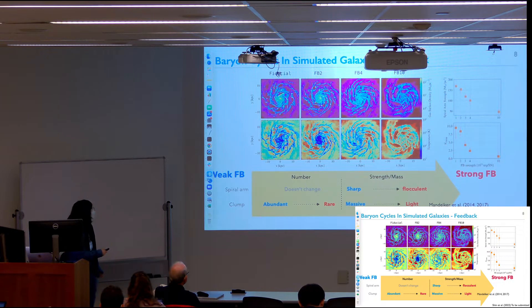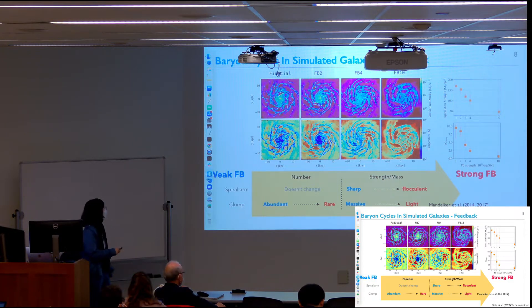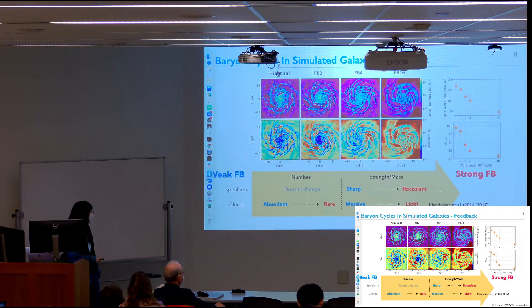This is the summary of the feedback simulation. For the higher feedback, we can see hotter ISM, and also this shows the gas density. We can see more fluffier or less dense ISM. This figure shows the spiral arm strength, and we can see that this is decreased by the feedback strength. Also, we counted the number of clumps, and this is also decreased by the feedback strength. These results are well matched with other research. So the feedback efficiently decreases the number of clumps, and also the spiral arm shape becomes more diluted and suppressed.